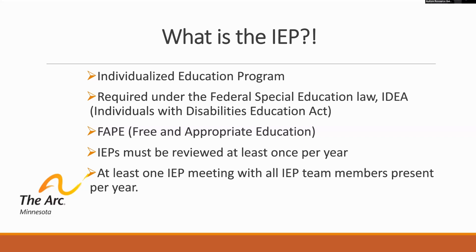FAPE doesn't always mean the student will get straight A's or have one-to-one support, but it does mean: special education services are provided at no cost to the parent, although you may be charged for the same general education fees such as extracurricular activity or lab fees. Your child's services must be specific to their needs and provide educational benefit — progressing toward specific goals, having access to and progressing in the general education curriculum, and inclusion in the same activities as children without disabilities. The IEP must be reviewed at least once per year with the whole IEP team present, and parents can request more than just the one required meeting.